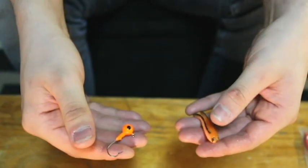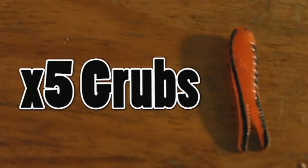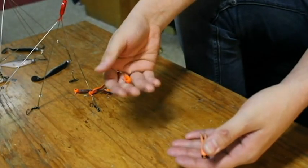But right now I'm just going to show you how to rig it up so you're set to use it. Alright, what you need is five jigs and five grubs for the start of your Alabama rig.